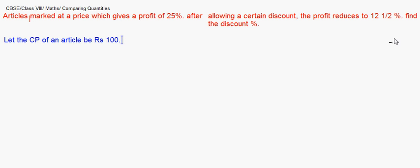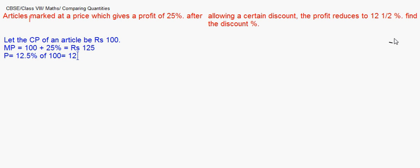Since the marked price is at a profit of 25%, the marked price = 100 + 25% = ₹125. After the discount, the profit reduces to 12.5%, so the profit on cost price of ₹100 is ₹12.5. Therefore the selling price = cost price + profit = 100 + 12.5 = ₹112.5.